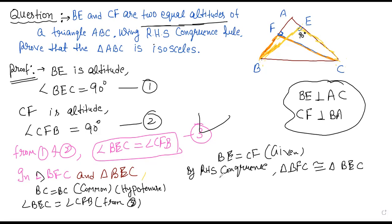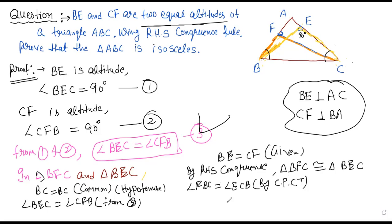If these two triangles are congruent, then by CPCT — corresponding parts of congruent triangles — we can say that angle FBC is equal to angle ECB. If two triangles are congruent, then their corresponding parts will be equal.